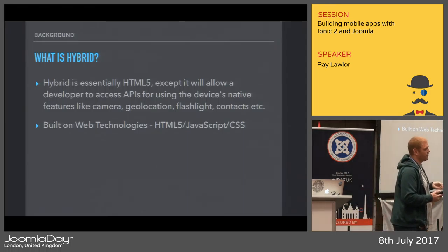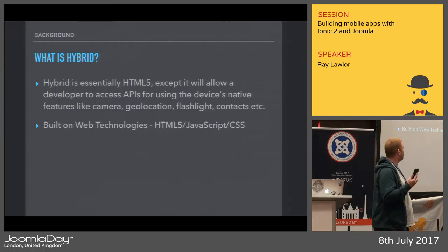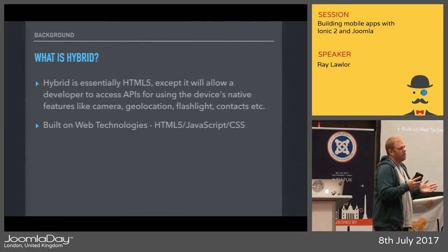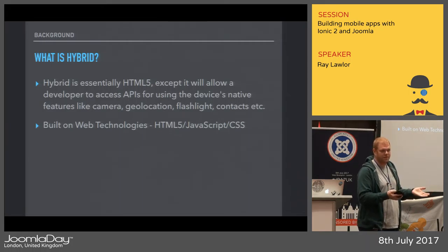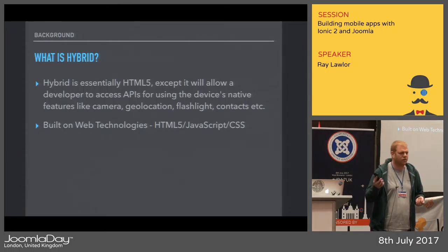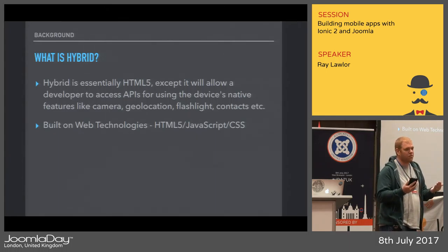The third type is hybrid, and this is what I'm here to talk about. Hybrid is essentially HTML5 except it allows the developer to access APIs for the device's native features like camera, geolocation, flashlight, and contacts. There are JavaScript plugins that allow us to access the phone's device features. This is all built on web technology, so everyone in this room has the skills to jump into this. Hybrid allows us to put fully featured mobile applications on the app store.